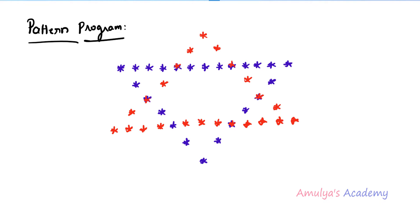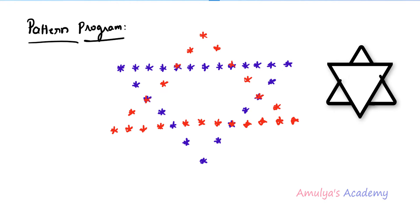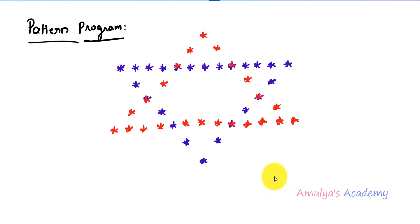Hello guys, welcome to Python programming tutorials by Amulyas Academy. I am back with another pattern program. Today we will print stars in a star shape. First we will write the program for a particular pattern with a specific number of rows, then we will convert that program for user input which will work for any number of rows.